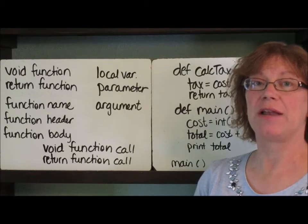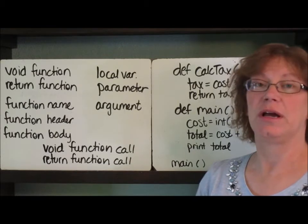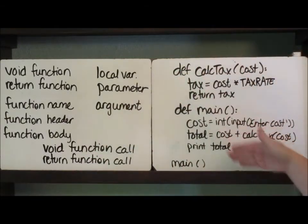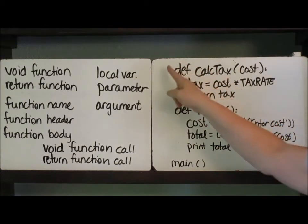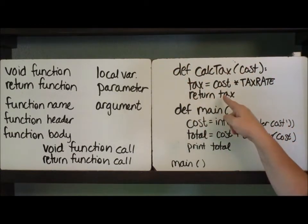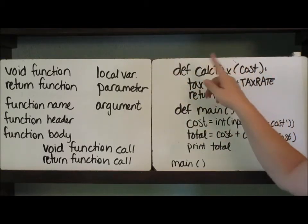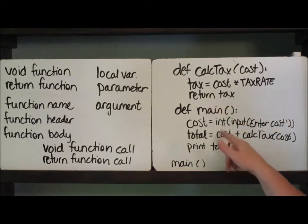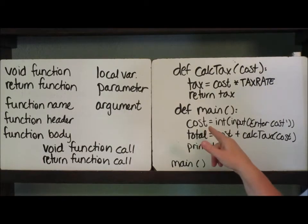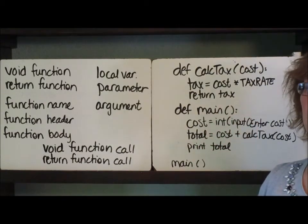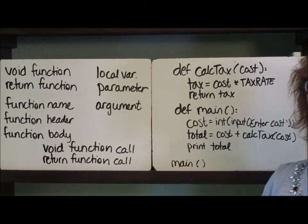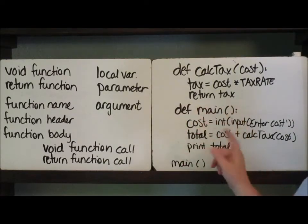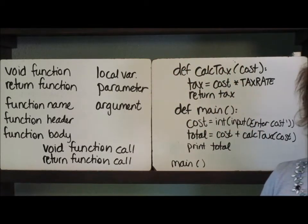A return function will return some kind of a value — usually it's a number but it could also be a string. So let's take a look at this example. This first function has a return in it, so I would label this one as a return function. This other one computes and prints but doesn't have the return statement in it, so this is going to be my void function. Now a void function does actually return something — it returns the value None with a capital N. We'll talk more about that later, but a void function returns None, while a return function will return an actual value that you're going to use somewhere in your code.